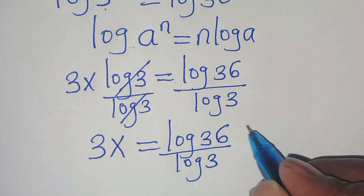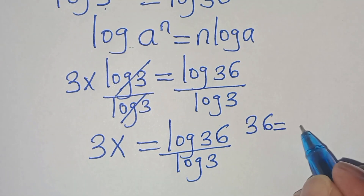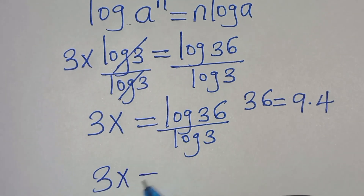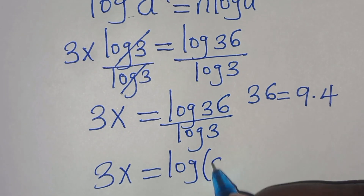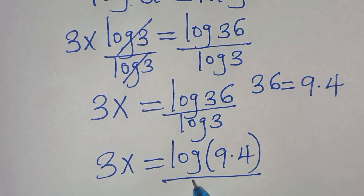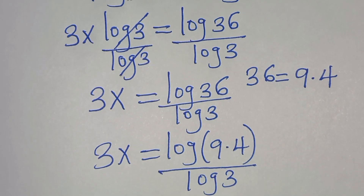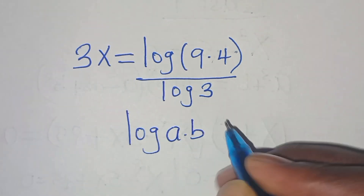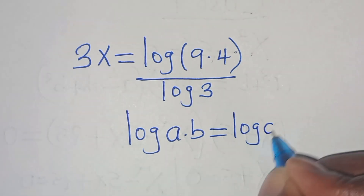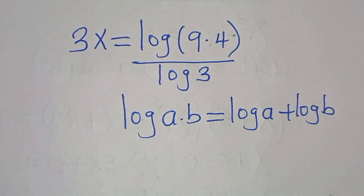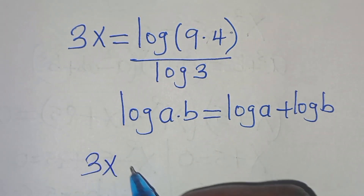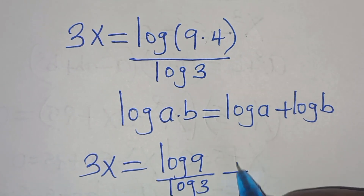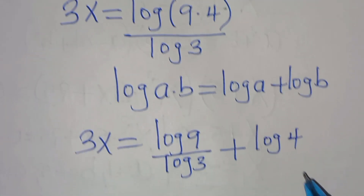Next, we can express 36 as 9 multiplied by 4. So 3x equals log(9 × 4). This is in the form log(a × b), which we can express as log a plus log b. Applying this logarithm property, we have 3x equals log 9 divided by log 3, plus log 4 divided by log 3.